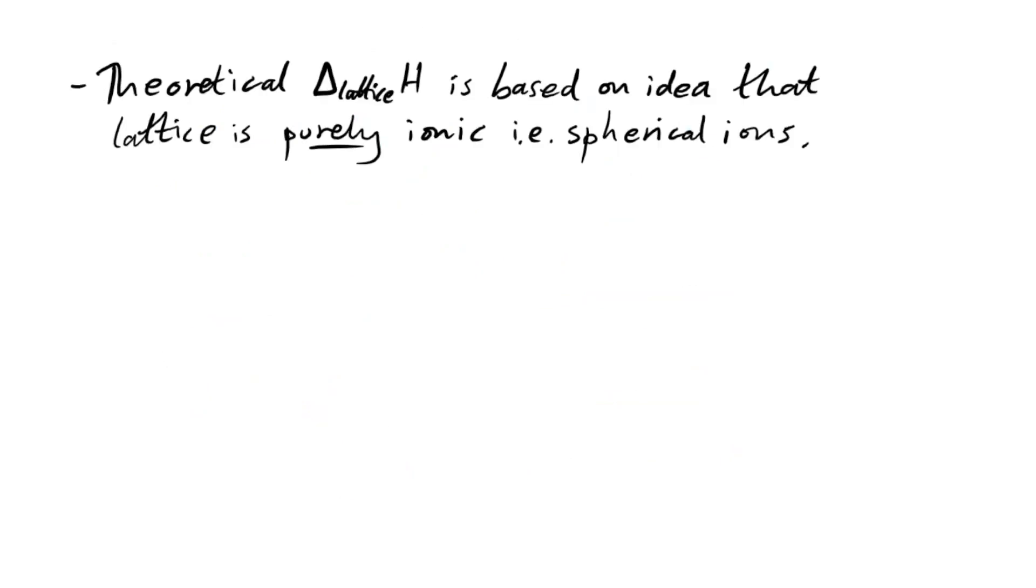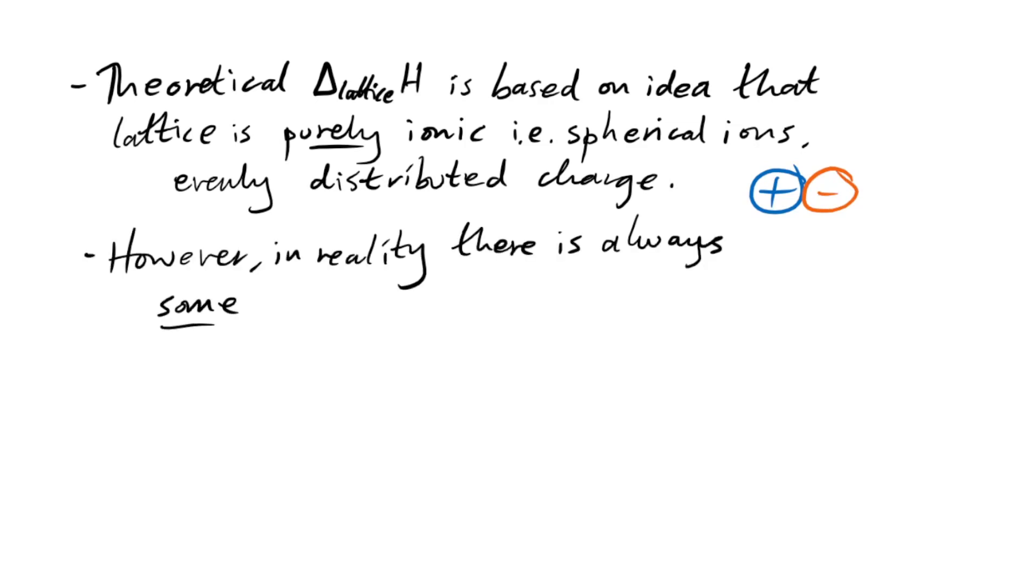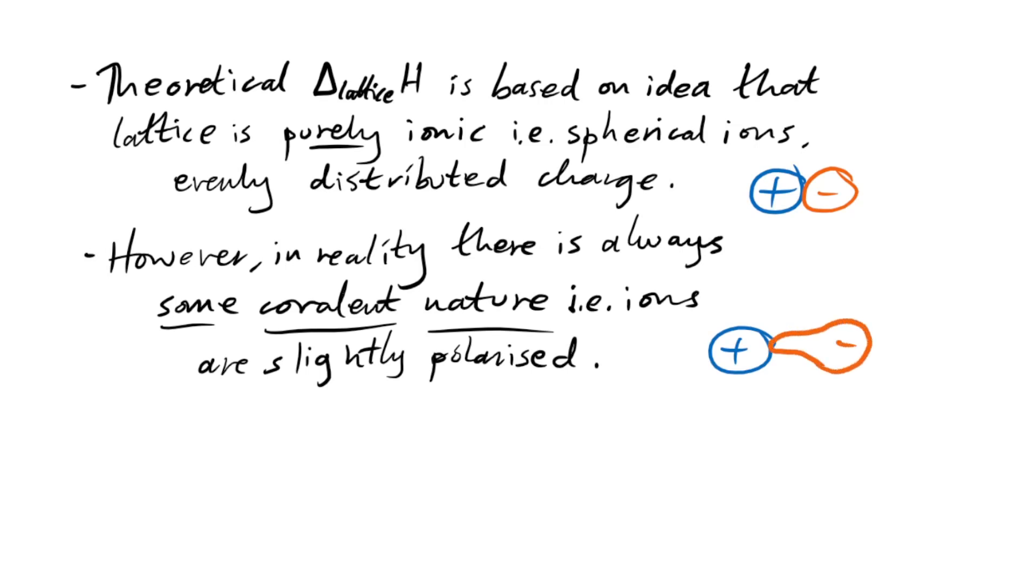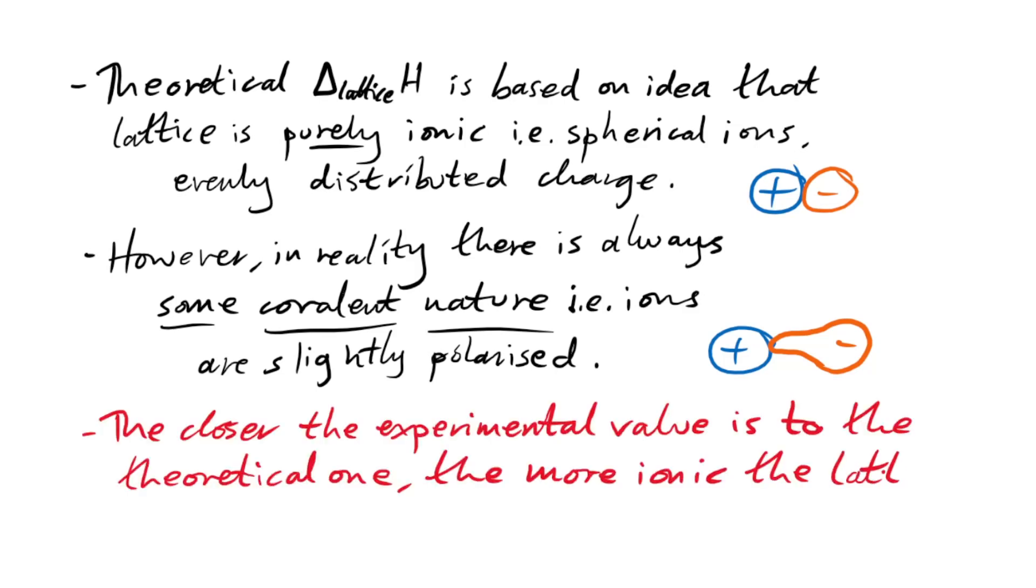It's worth noting that yes, we can calculate this lattice enthalpy change, but that's only going to be true if our lattice is purely ionic. That is spherical ions. That means that charge is distributed evenly around the ions. However, in reality, there's always going to be some covalent nature to the bonding in your lattice. That means the ions are slightly polarised. So we can compare the theoretical and the experimental values for this enthalpy change. And the closer they are, then that means the more ionic the bonding in the lattice is.